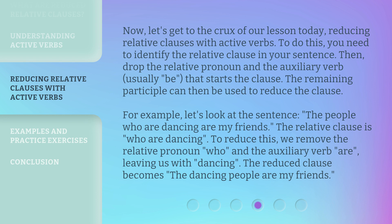The remaining participle can then be used to reduce the clause. For example, let's look at the sentence 'the people who are dancing are my friends.' The relative clause is 'who are dancing.' To reduce this, we remove the relative pronoun 'who' and the auxiliary verb 'are,' leaving us with 'dancing.' The reduced clause becomes 'the dancing people are my friends.'